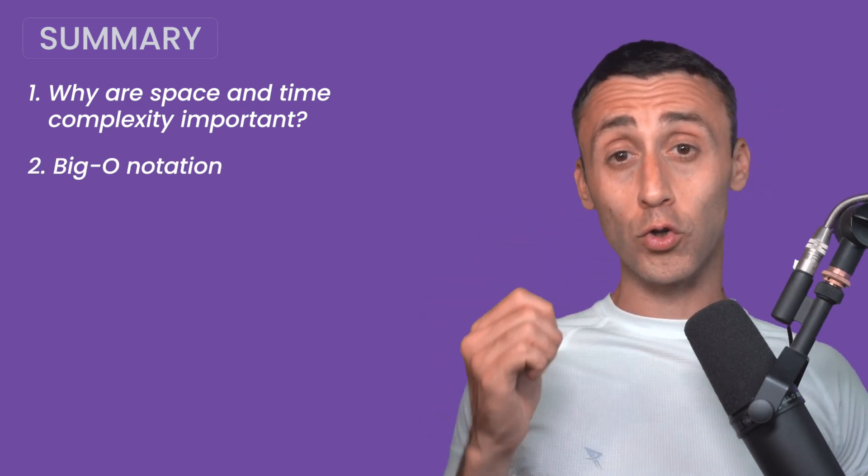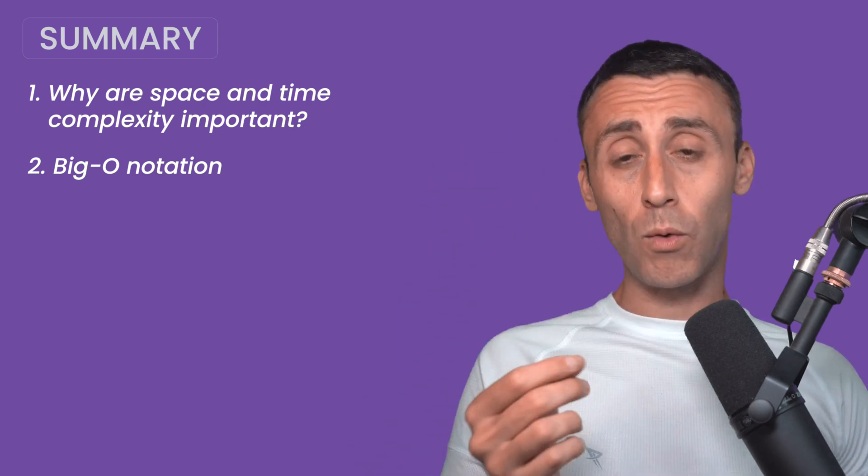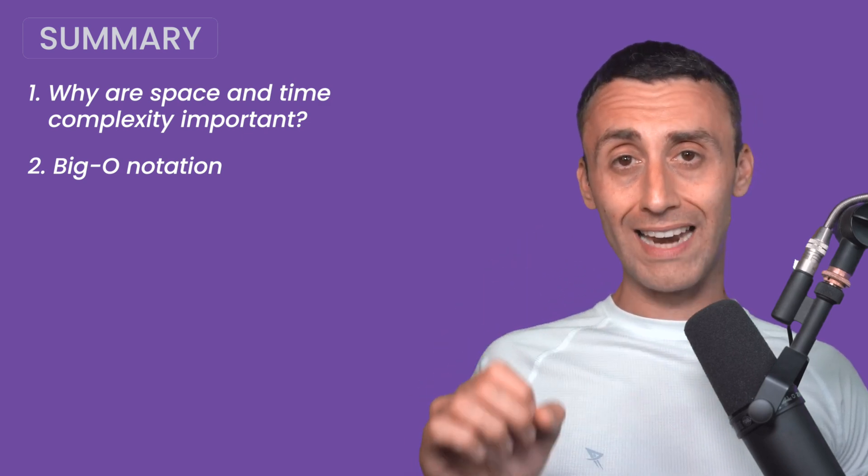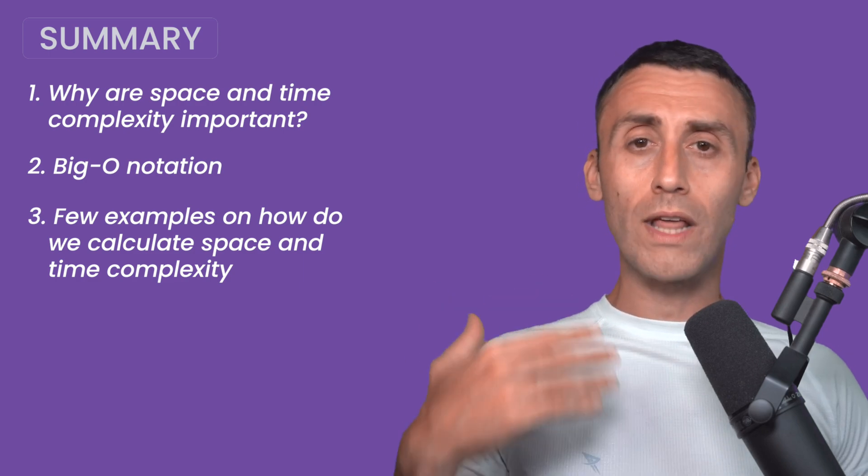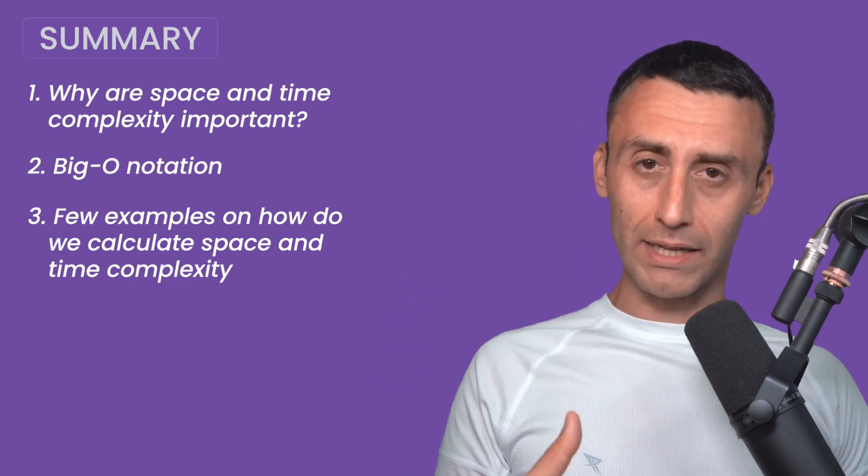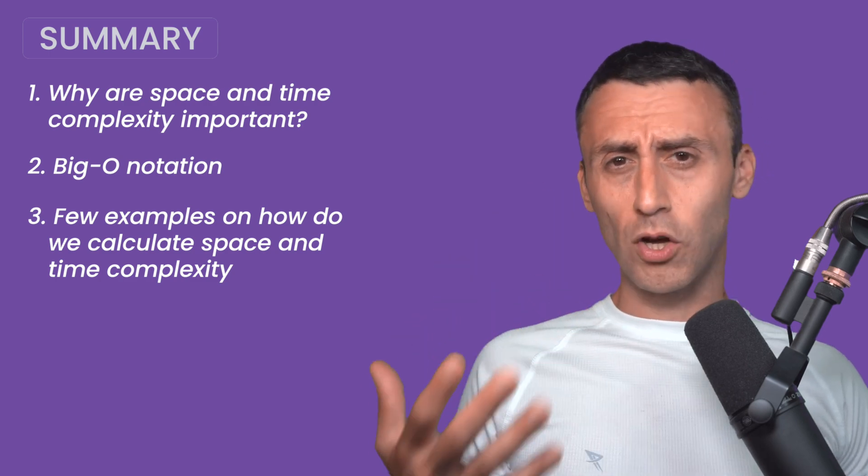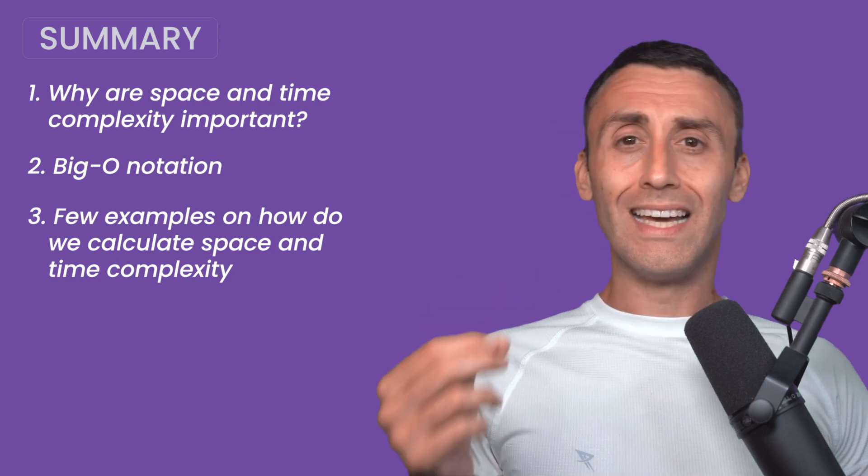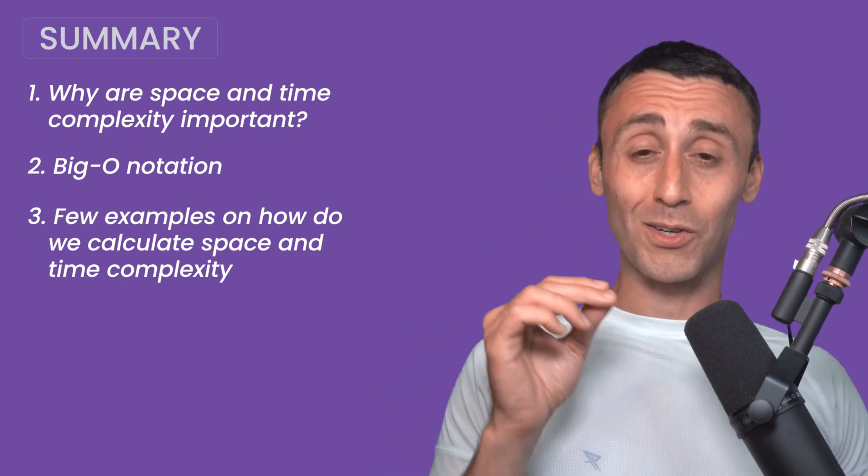Then we introduced the big O notation and how it gives us an upper bound, meaning we can be sure an algorithm will take at most big O of n time. We also looked at a few examples to see how to calculate time and space complexity in practice. But remember, we covered three examples here, but you can always apply these concepts to other programs to see if you have grasped the concepts. That's everything you need to know to get started with time and space complexity.